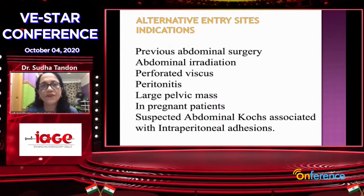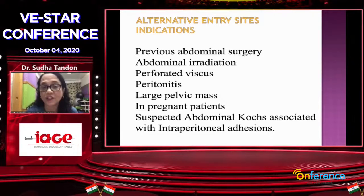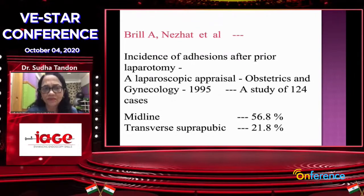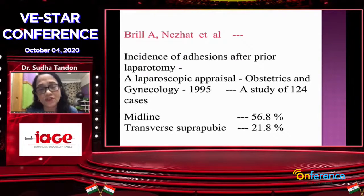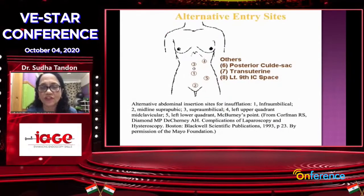Alternative entry sites — I'm very fond of them, especially the Palmer's point. When do you use them? Previous abdominal surgery, abdominal irradiation, perforated viscus, peritonitis, large pelvic mass, pregnant patients, and suspected abdominal cysts, especially in our country. Nezhat et al. found that when there was a midline scar, there were 56% adhesions, and with a transverse scar, 20% adhesions where you could injure the bowel. Hence they advocated use of alternative entry sites.